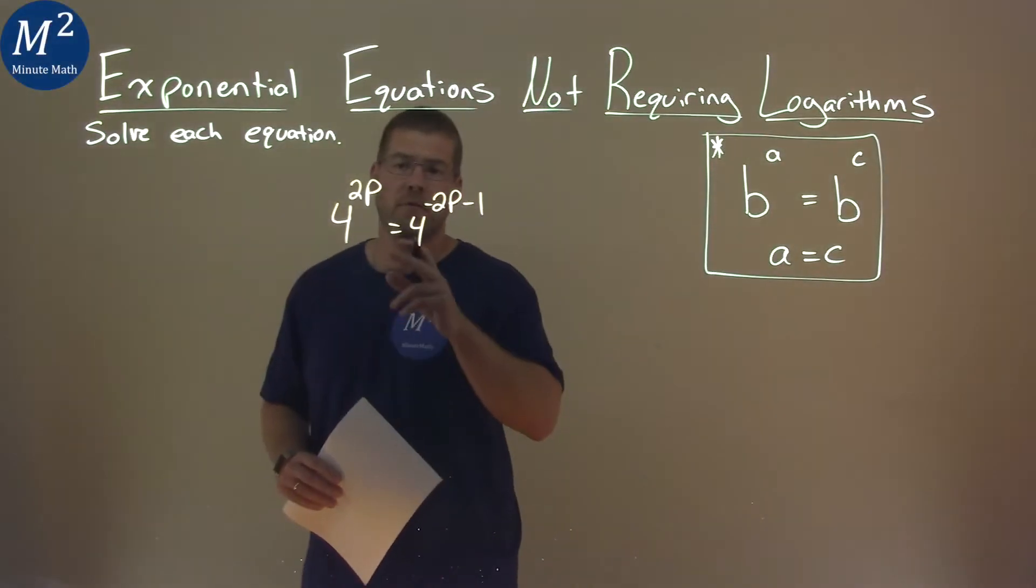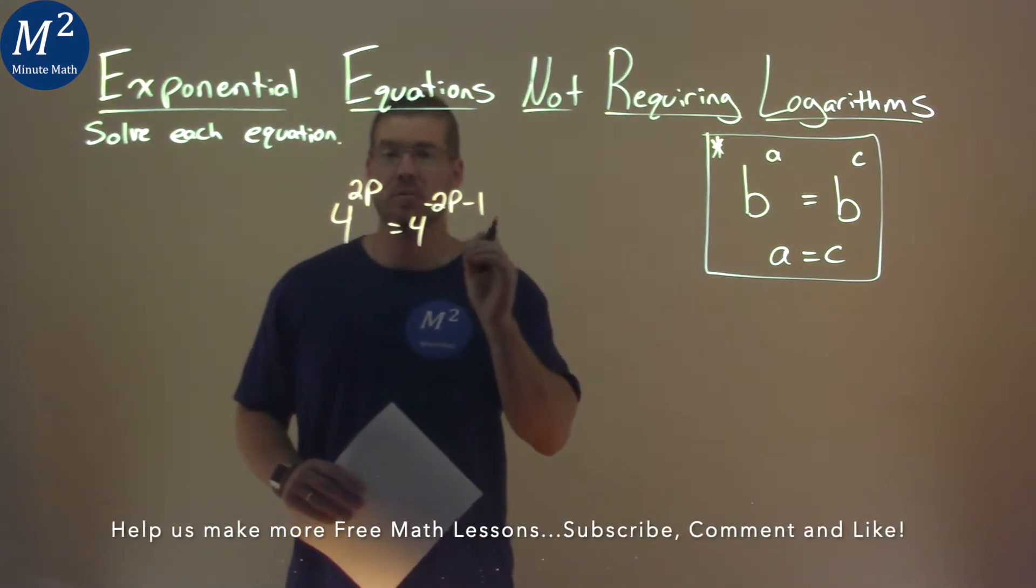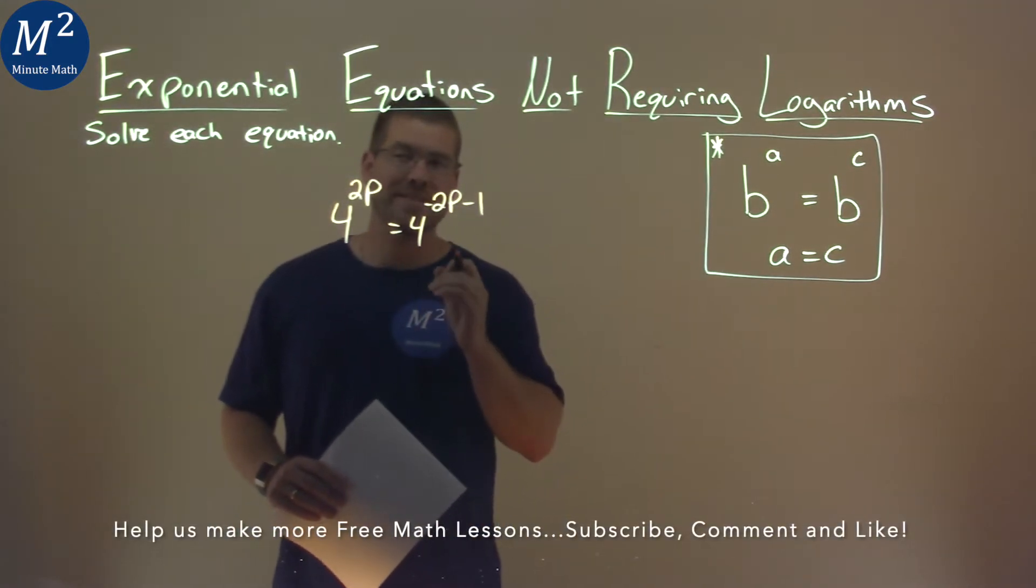We're given this problem right here. 4 to the 2p power equals 4 to the negative 2p minus 1, and we want to solve this equation.